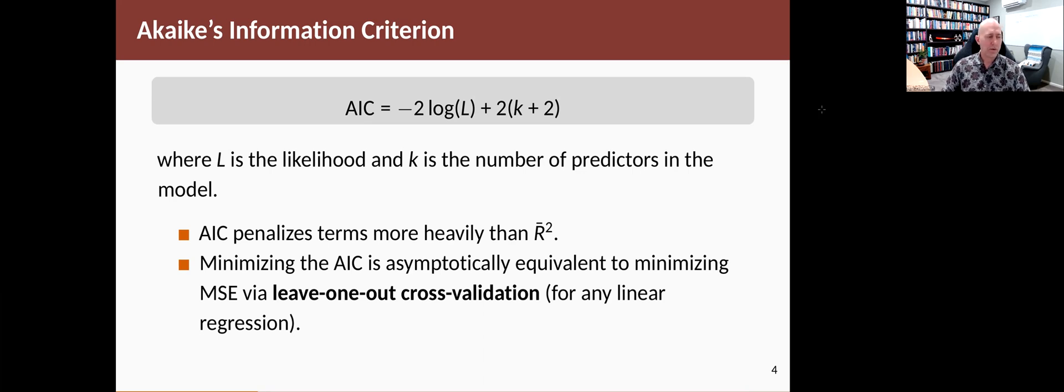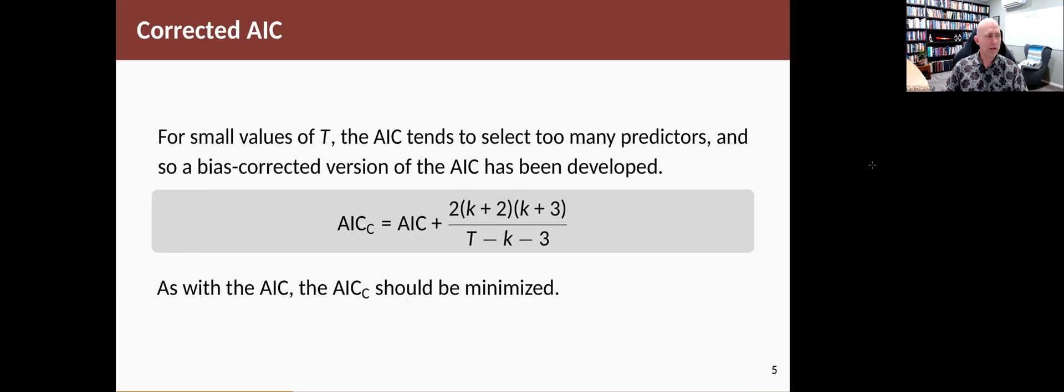But the reason that this is particularly good for forecasting is that minimizing the AIC is asymptotically equivalent to minimizing the mean squared error by leave-one-out cross-validation. And that makes it a really useful thing to do if you want to choose predictors to get good forecasts.